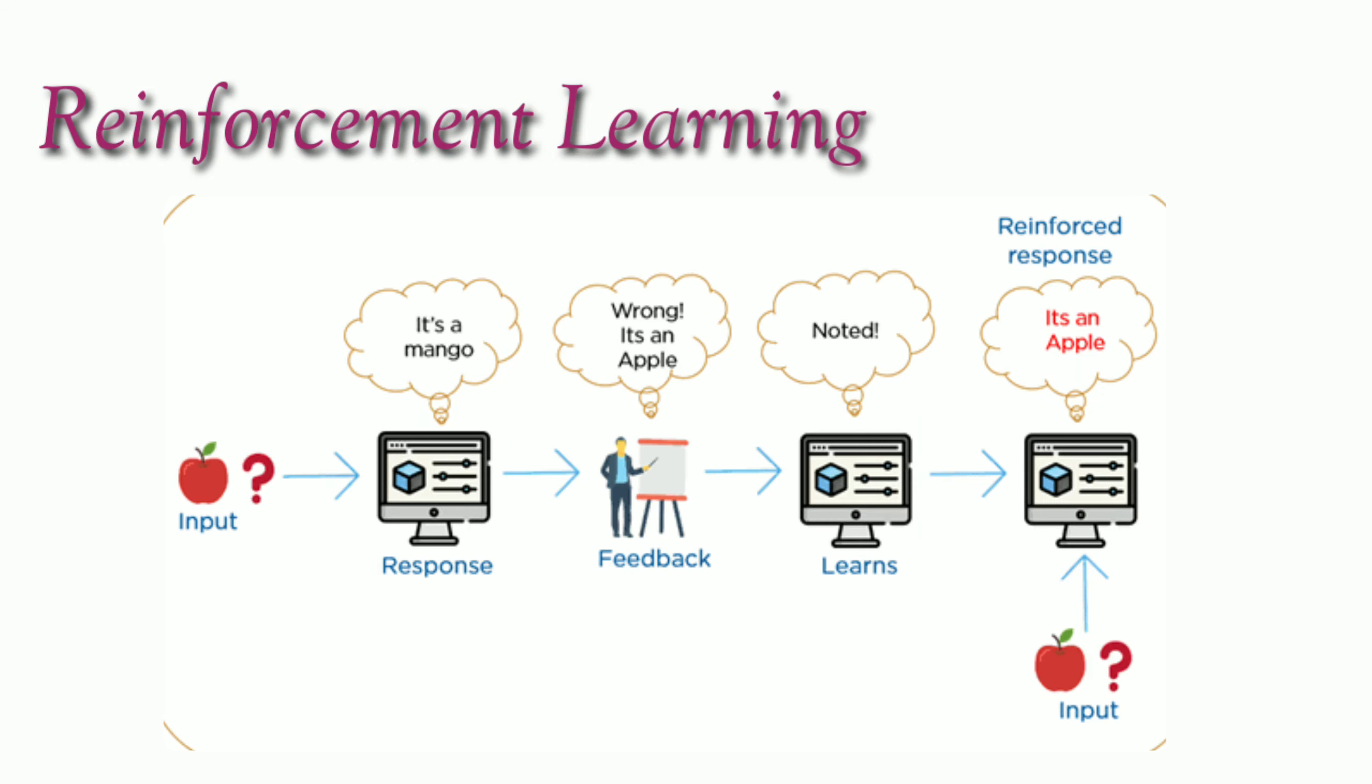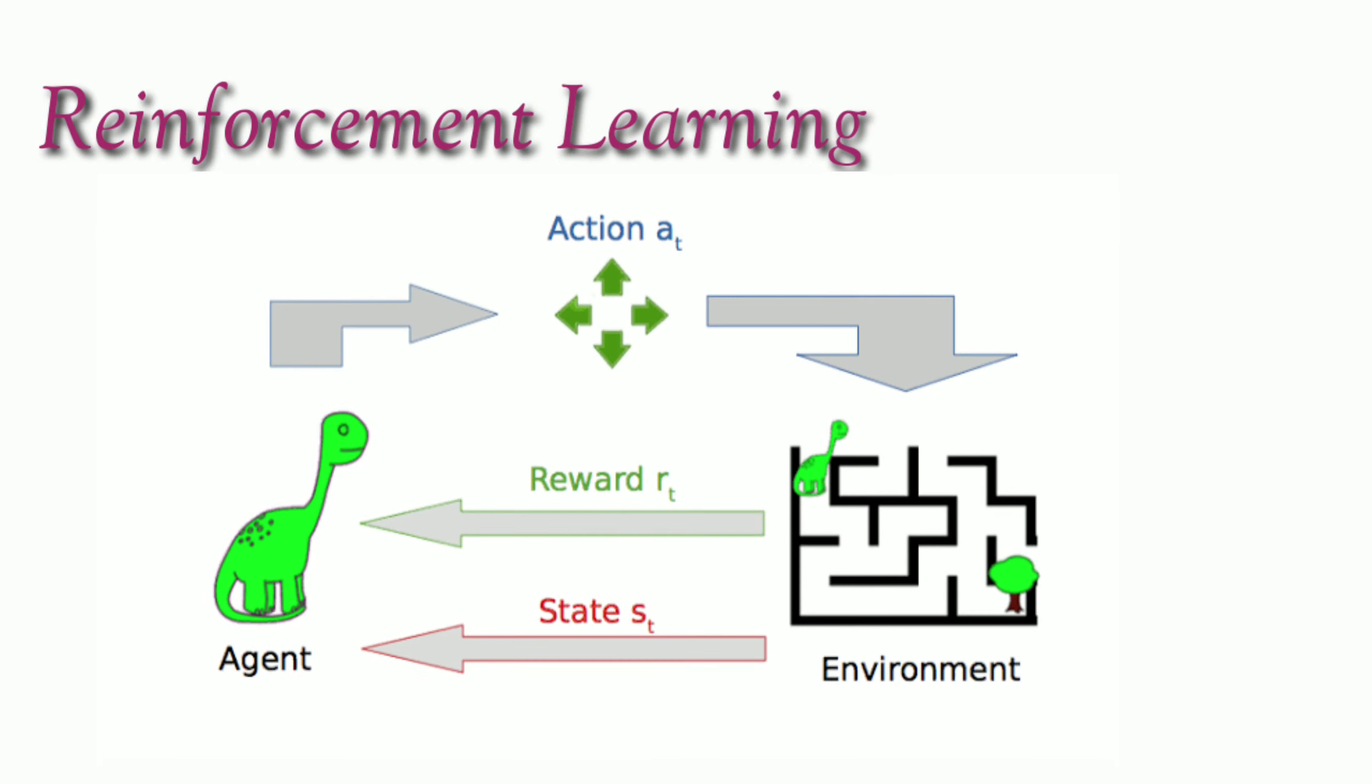So the third one is reinforcement learning. Reinforcement learning is the area of machine learning in absence of training data set used to learn from its experience. For example, it allows AI to play games. When someone needs to find the best possible path, reinforcement learning is used.